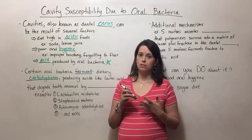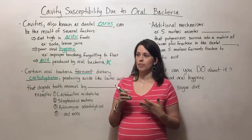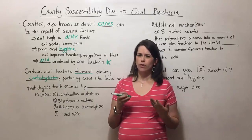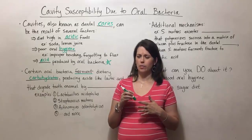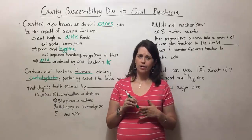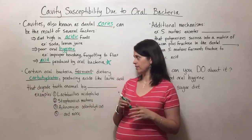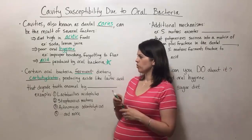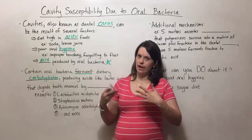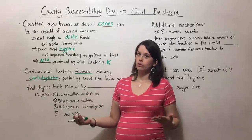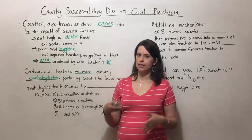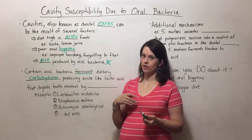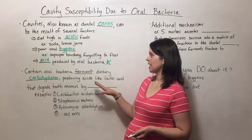Simple sugars include things like soda, candy, and muffins, as well as refined carbohydrates like white bread, bagels, and that kind of thing. Really, any carbohydrate can contribute to this process, but a diet high in refined carbohydrates makes it even more likely.